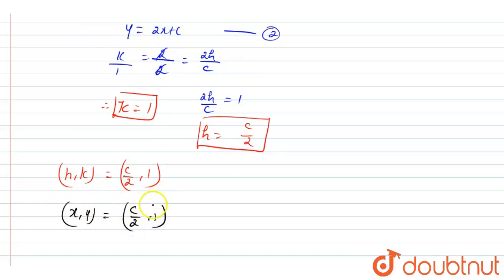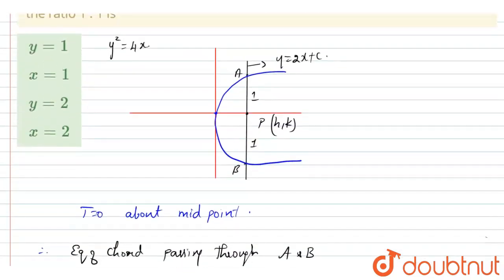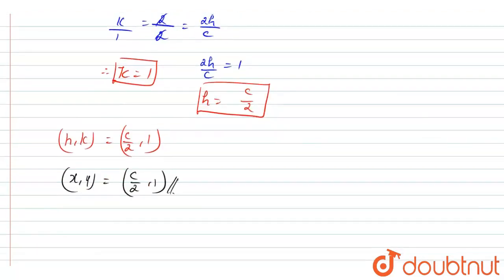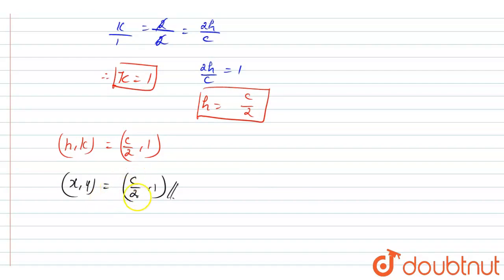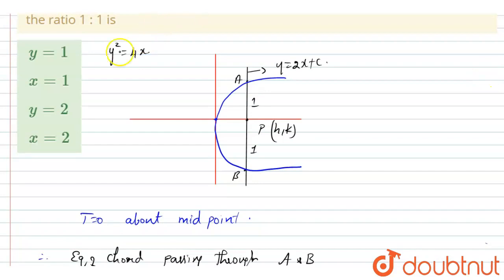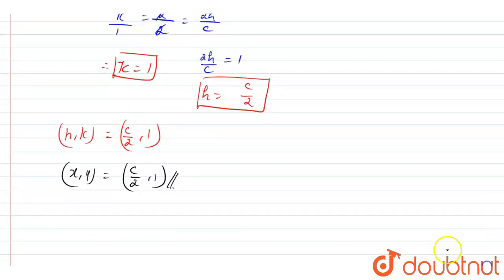Okay students, so this is the answer to our question. The locus point (h, k) is substituted as (x, y), which equals (c/2, 1). So y value equal to 1 and x value equal to c/2. If we see our options, option A is the correct answer.